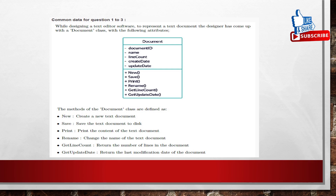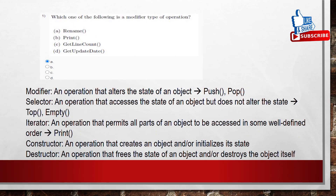Let's see the questions one by one. Which of the following is a modifier type of operation? We know that there are five types of operations in objects. The first is modifier — an operation that alters the state of the object. For example, with a stack, push and pop operations alter the state of the stack, so these are modifier operations.